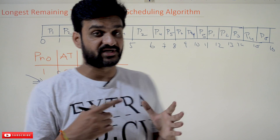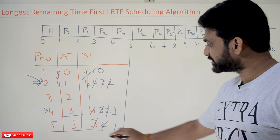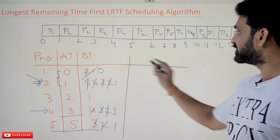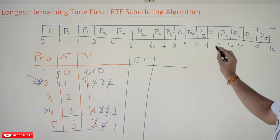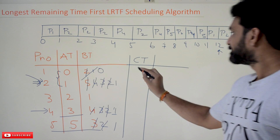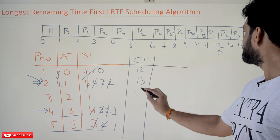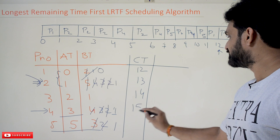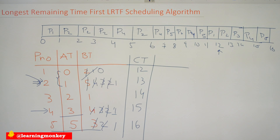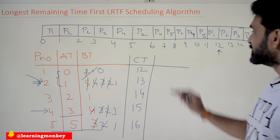Now let's calculate completion time and other values using the Gantt chart. The completion time for P1 is 12, for P2 is 13, for P3 is 14, for P4 is 15, and for P5 is 16.